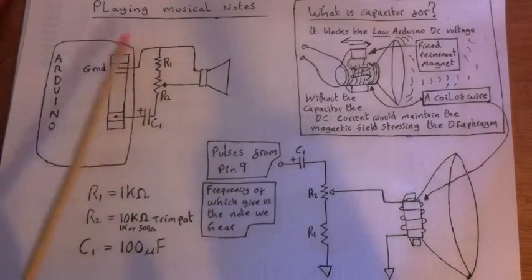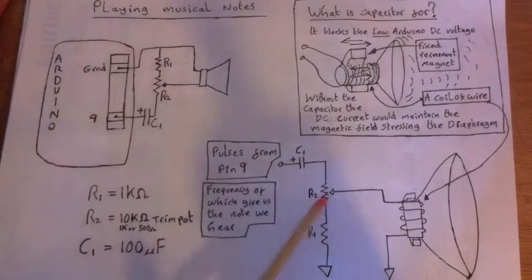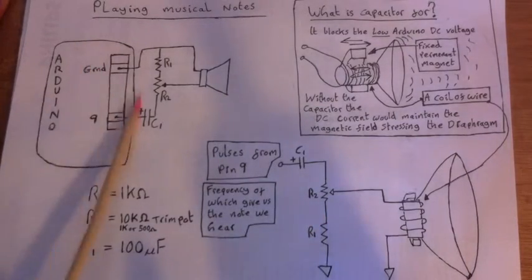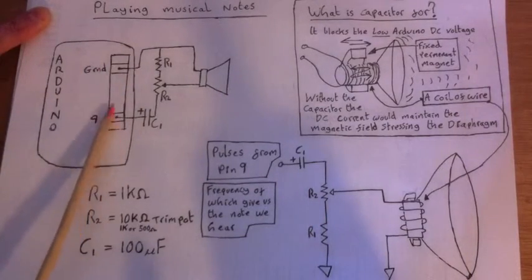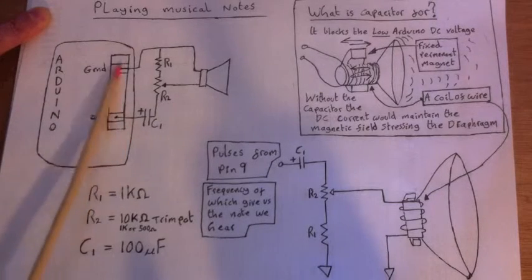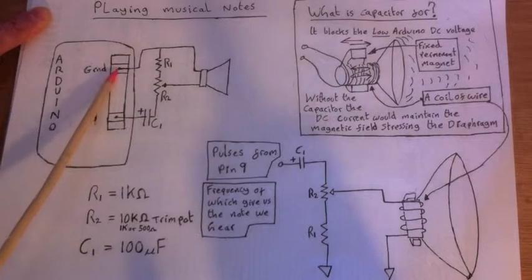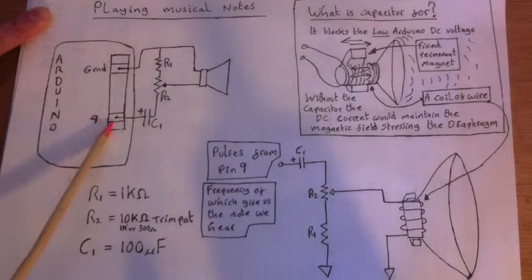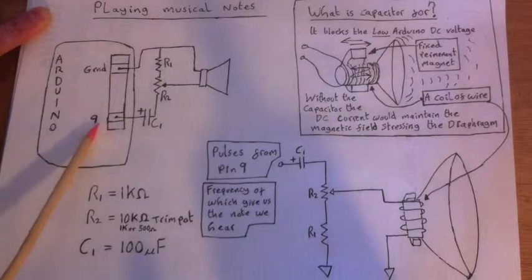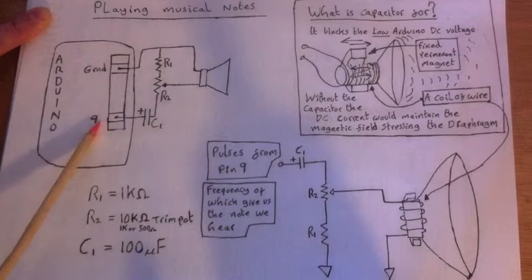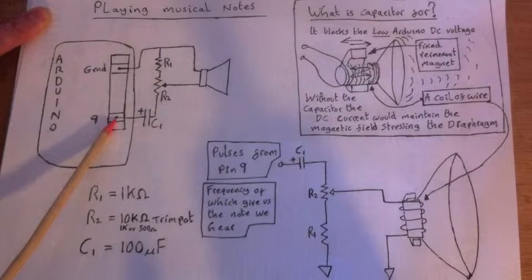So the first thing we're going to do is, this is the circuit here. Now all I've done is I've simplified it here. When you look at the Arduino, you'll have this sequence of pins. It'll be the digital output pins, and on one end you'll have the ground pin, and down here I've placed it into pin 9. You can choose any pin you like, but the code's written for pin 9, so I've set pin 9 to be the output.